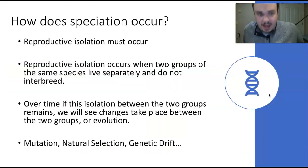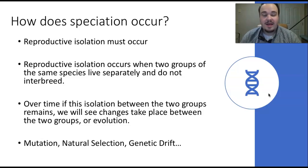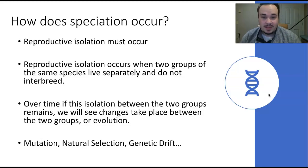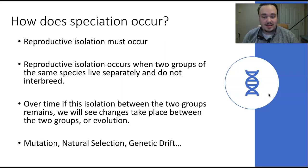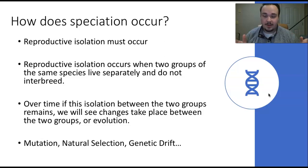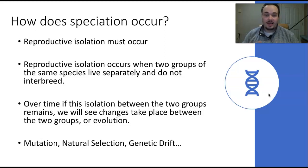How does speciation occur? For speciation to occur, we need something called reproductive isolation — two groups of the same species living separately where they can't mate with each other. When this happens, changes take place between the two groups due to mutation, natural selection, and genetic drift — all the mechanisms of evolution we've discussed — acting upon these two isolated groups of individuals.